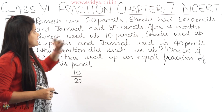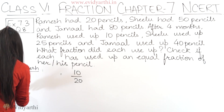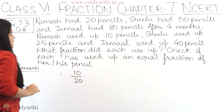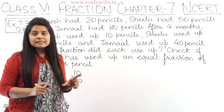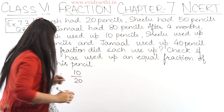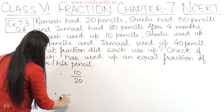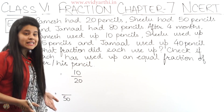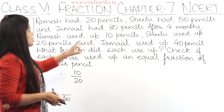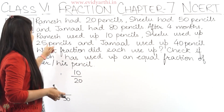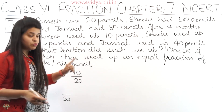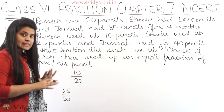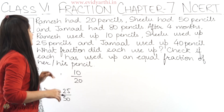Next we have Shilu. Shilu had a total of 50 pencils, so the denominator is 50. From those 50 pencils, Shilu used 25 pencils. So the fraction is 25 upon 50.